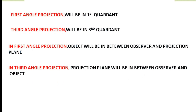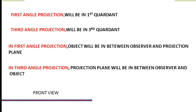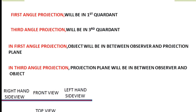Now we see the main views for first angle and third angle projections. In first angle projection, this is the reference line. The front view is made above the reference line, the top view is below the front view, on the left-hand side there will be the right-hand side view, and on the right-hand side there will be the left-hand side view.